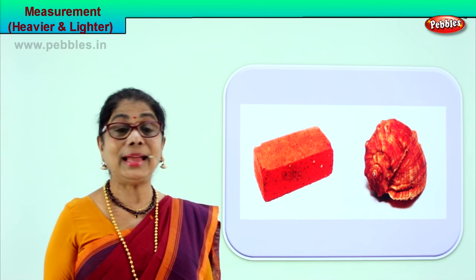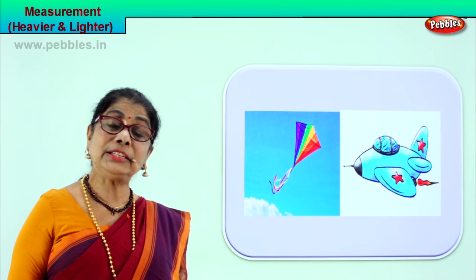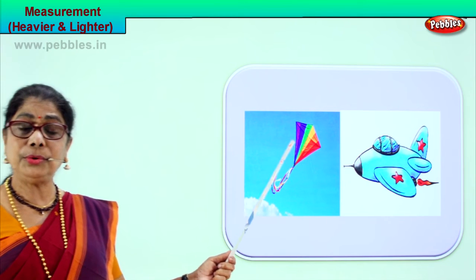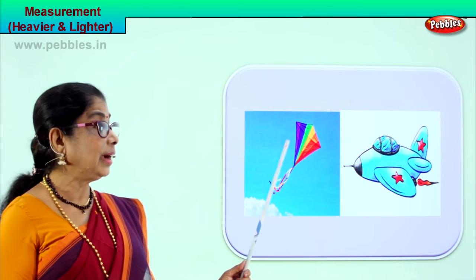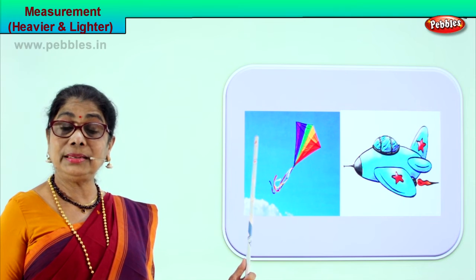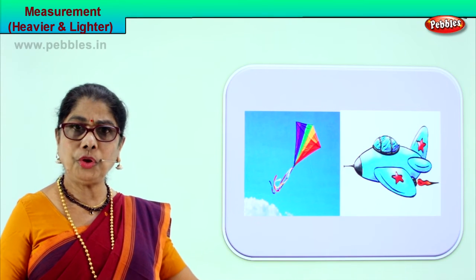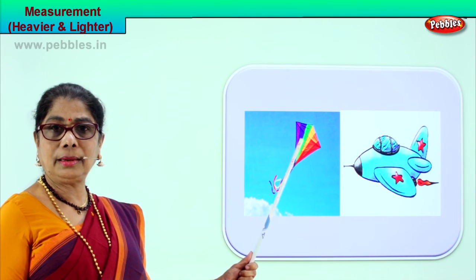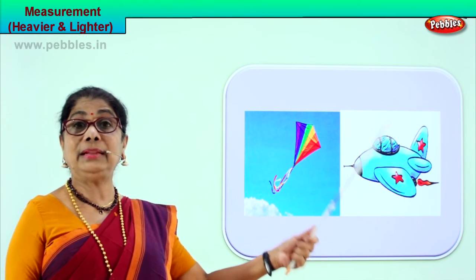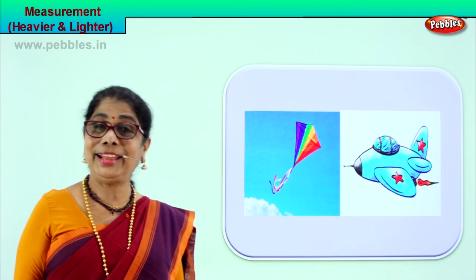Good. Let's look at another picture. I'm sure now you understood the two measurements heavier and lighter. You make your own kite, don't you? Now you have a kite and a jet plane. The kite is lighter than the jet plane. The jet plane is heavier than the kite. Even if you have a toy airplane, the toy airplane is heavier than a kite.